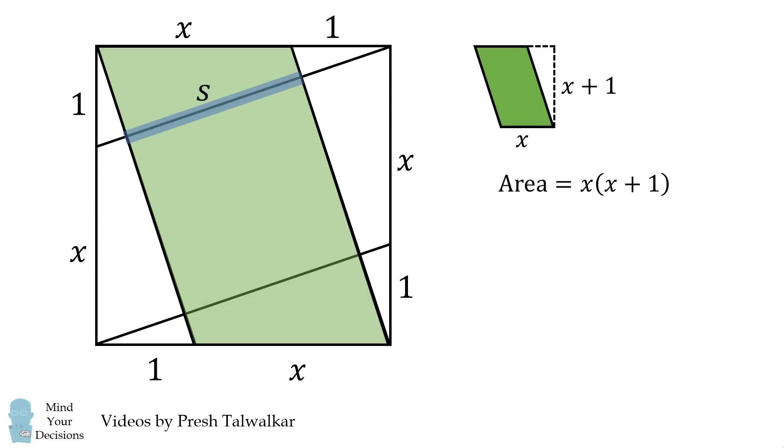We'll take the height to be the length s of this square, and the base to be the hypotenuse of this right triangle. We can calculate the length of this hypotenuse using the Pythagorean theorem. It equals the square root of 1 plus the quantity x plus 1 squared.